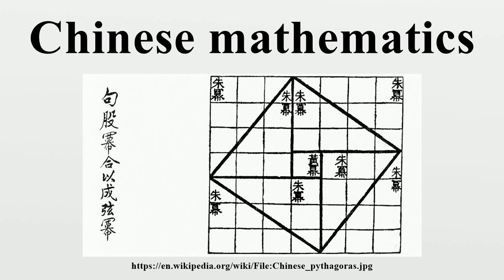The oldest existent work on geometry in China comes from the philosophical Mohist canon of circa 330 BC, compiled by the followers of Mozi. The Mohist Jing described various aspects of many fields associated with physical science and provided a small wealth of information on mathematics as well.